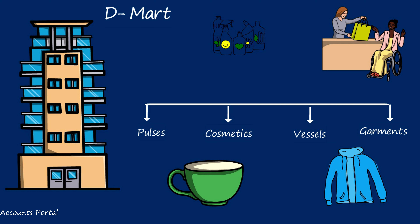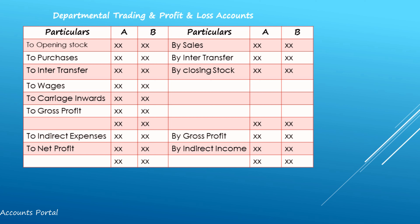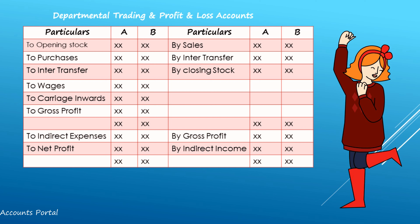When are departmental accounts used? Departmental accounts are used when a business deals with two or more products or services. If an organization is subdivided into several departments, and we can easily identify the profit and loss of each department separately, we prepare a trading and profit and loss account in columnar form, with each column representing one department. This is referred to as departmental accounts.